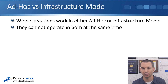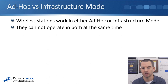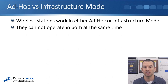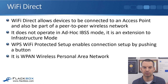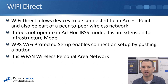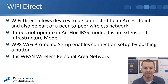Wireless stations work in either ad hoc or infrastructure mode — they can't operate in both at the same time. But what if you're in the corporate office connected to the wireless LAN and also want to connect to a wireless monitor? The solution is Wi-Fi Direct, which allows devices to be connected to an access point in infrastructure mode and also be part of a peer-to-peer wireless network. Wi-Fi Direct does not operate in ad hoc IBSS mode — it's an extension to infrastructure mode, so it's still infrastructure mode.